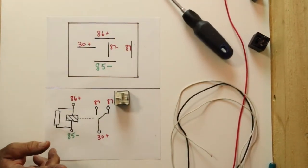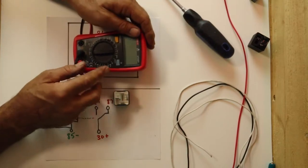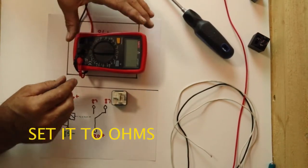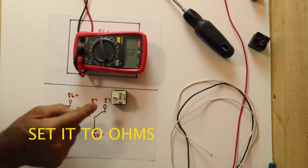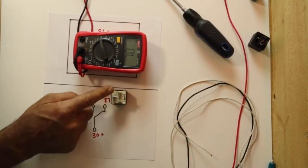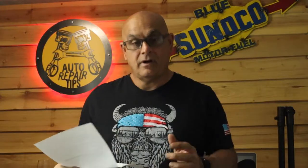So the first thing you want to do when you're testing it is you want to get your meter. And you want to set it on 200. You want to measure the resistance between 85 and 86.